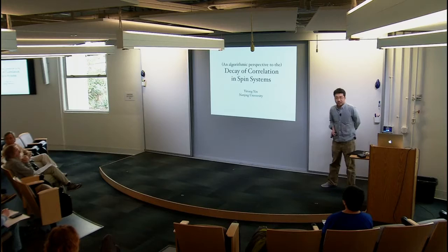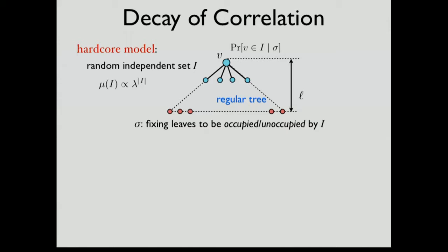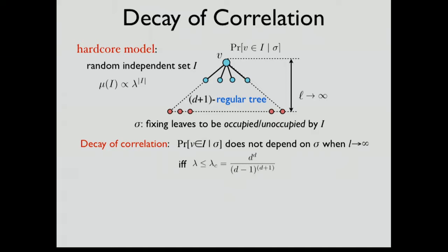This talk is about the decay of correlation in spin systems and how it is related to approximate counting algorithms. Let's begin with an important example: the hardcore model on the rooted regular tree truncated at level L, with boundary condition fixing the leaves to be occupied or unoccupied by a random independent set sampled proportional to a weight. A well-known critical phenomenon is that the correlation between this boundary condition and the marginal distribution at the root decays to zero as the depth goes to infinity, as long as the parameter is bounded by the uniqueness threshold.